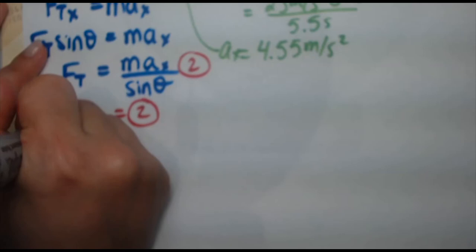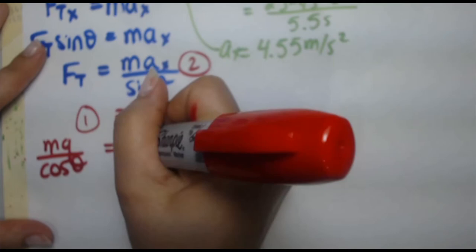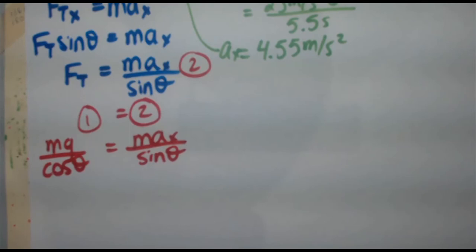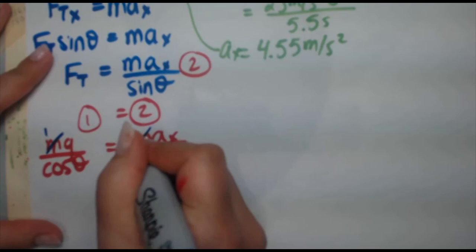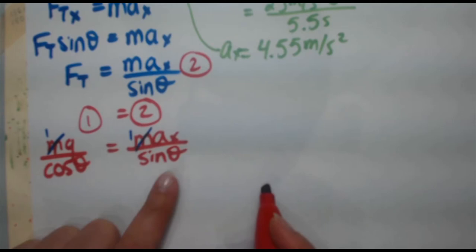So now if I set one equal to two, I'm gonna get mg over cos theta equals m a x over sine theta. So if you were thinking in the beginning of the question they didn't give us mass, well, that's because they didn't need to, it cancels out. There's one mass on each side as a product, so it's gone.